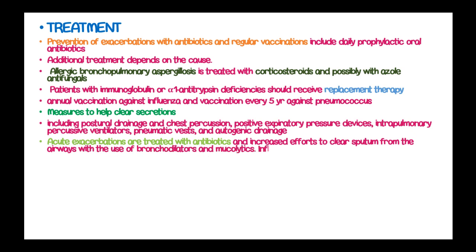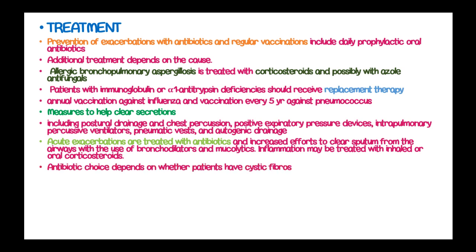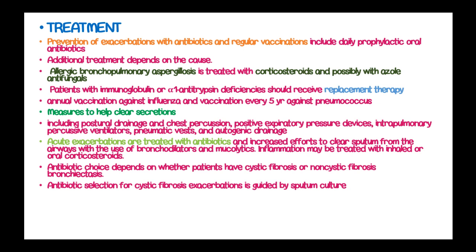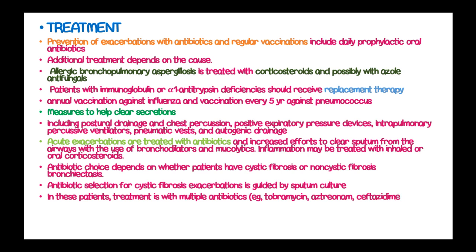Acute exacerbations are treated with antibiotics and increased efforts to clear sputum from the airways using bronchodilators and mucolytics. Inflammation is treated with inhaled bronchodilators or other corticosteroids. Antibiotic choice depends on whether patients have cystic fibrosis or non-cystic fibrosis bronchiectasis, and antibiotic selection for cystic fibrosis is guided by sputum culture. Treatment is with multiple antibiotics such as tobramycin, aztreonam, ceftazidime, ticarcillin-clavulanate, and cefepime.